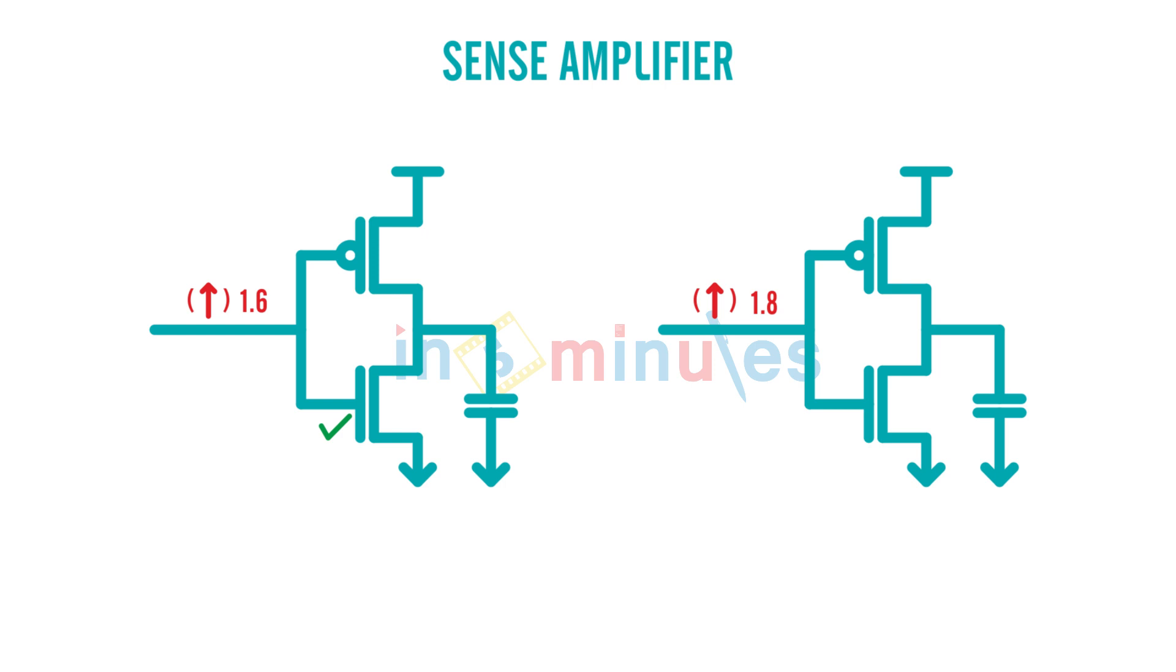Or in simple words, which of the current would be able to discharge the output capacitance faster, or which output will reach zero fast?